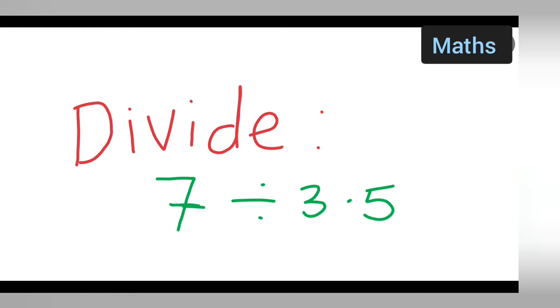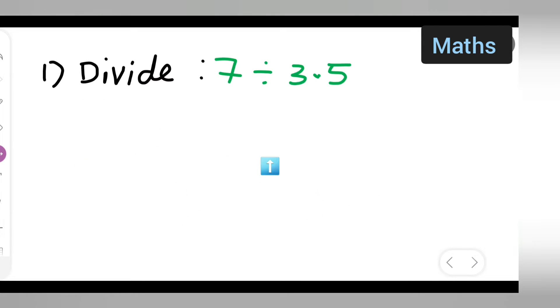Welcome to today's class of mathematics. Today's question is divide 7 by 3.5. Your decimal point is there, right? So how are you going to divide especially when you have a decimal point?